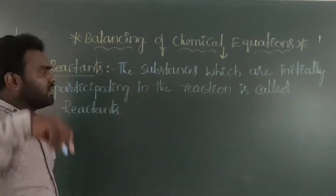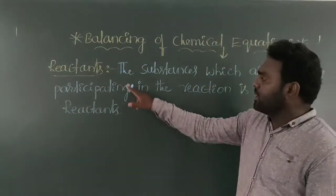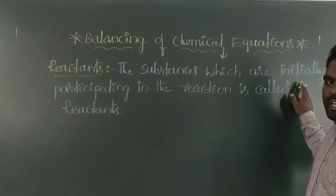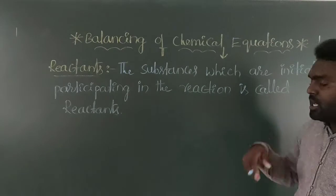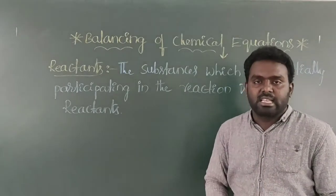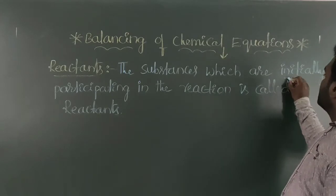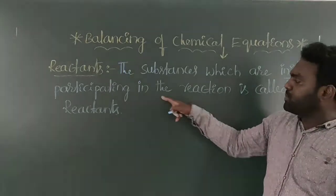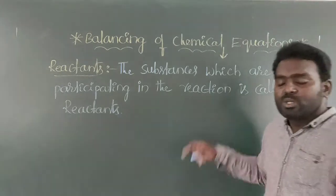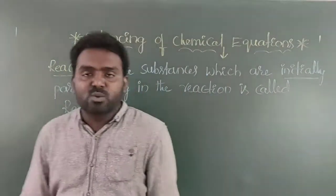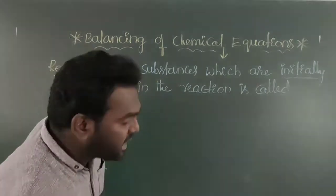The substances which are initially participating in the reaction — therefore they are all called as reactants. For example: carbon burns in the presence of oxygen to produce carbon dioxide. This is called one of the chemical reactions.